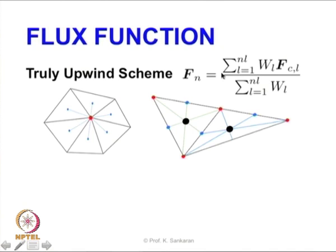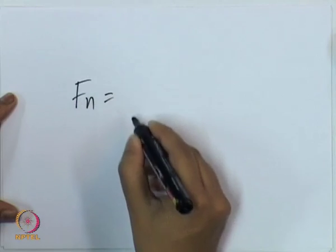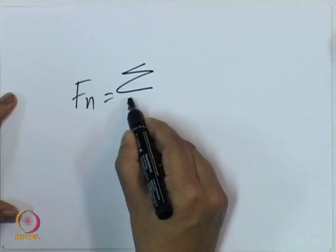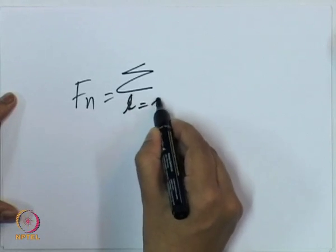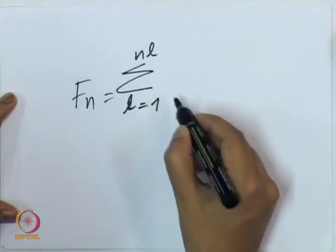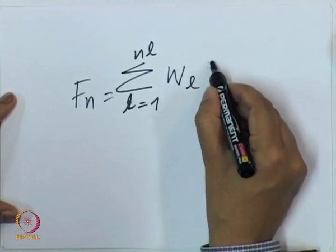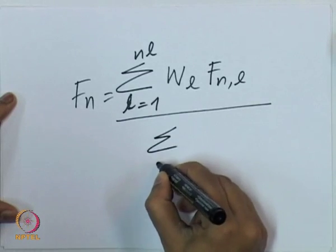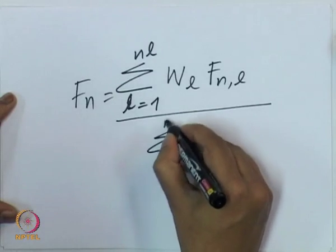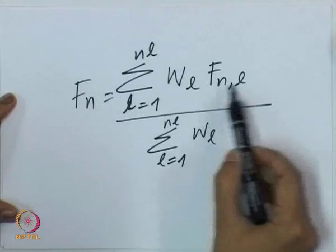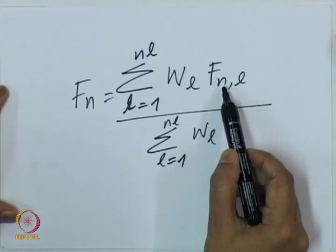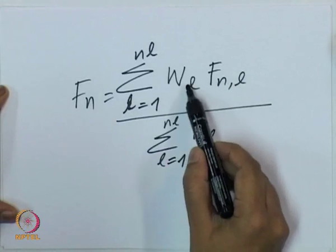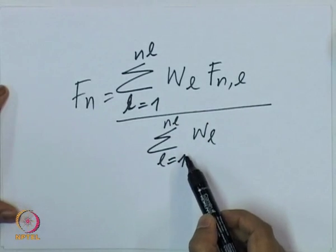The weight for the closer triangle will be more compared to the weight of the farther triangle, and that is what you see in this equation — a weighting of the field. We can write the equation in a simpler form: f(n) equals the summation over l from 1 to N_l of w_l · f_{n,l}, divided by the sum of all weights. Whatever node is closer gives more weightage, and finally we divide by the sum of all weights.